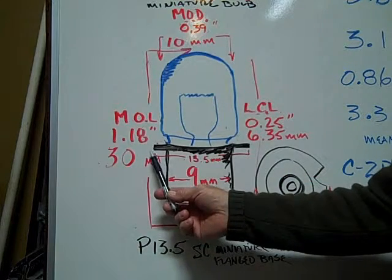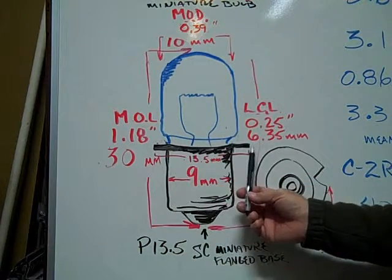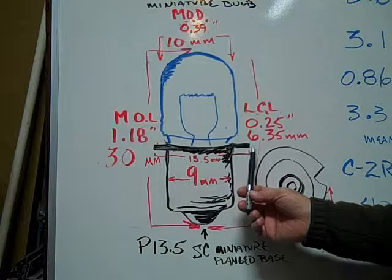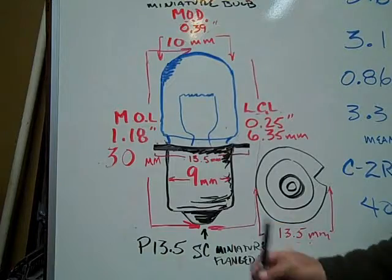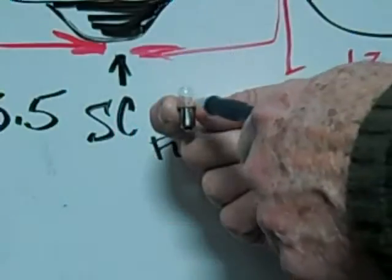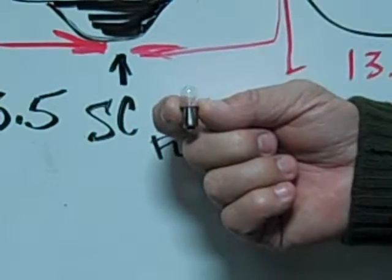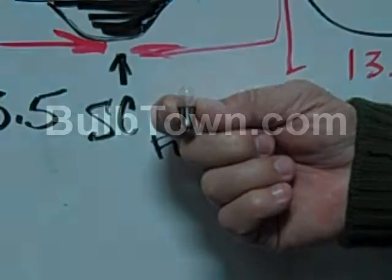The flange measures 13.5 millimeters diameter and the base is 9 millimeters in diameter. This is an example of an XPR3 Xenon Miniature Bulb.